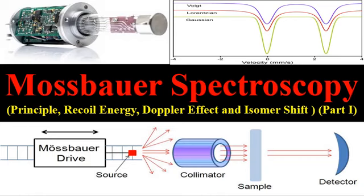Dear students, in this video we are going to discuss Mössbauer spectroscopy. Mössbauer spectroscopy is a versatile technique used to study nuclear structures. Here we use the absorption and emission of gamma rays, which are part of the electromagnetic spectrum. This technique uses the combination of the Doppler shift and the Mössbauer effect to study hyperfine transitions between the excited and ground state of the nucleus. The most commonly studied isotopes are iron-57 and tin.